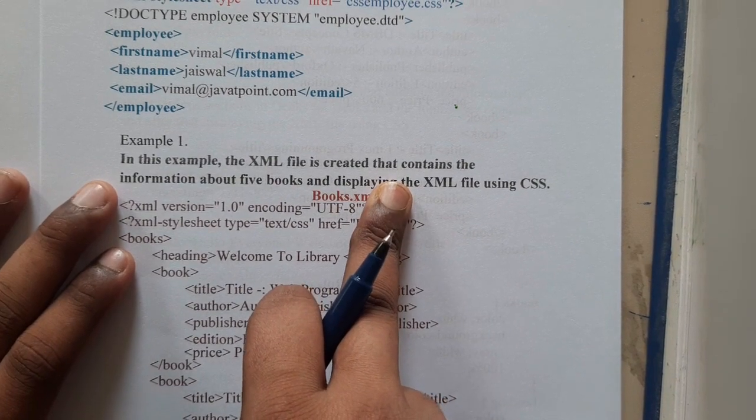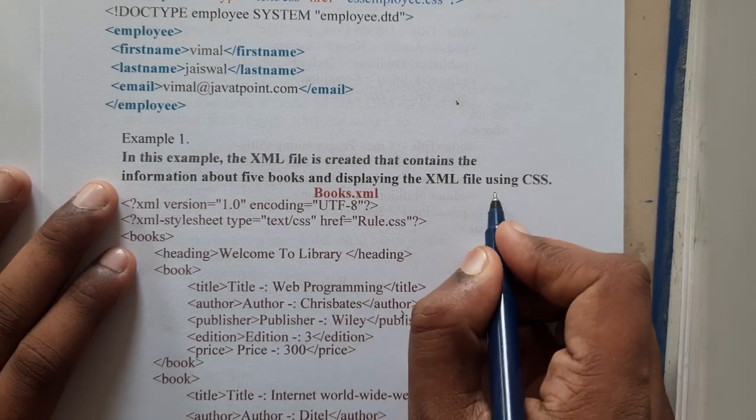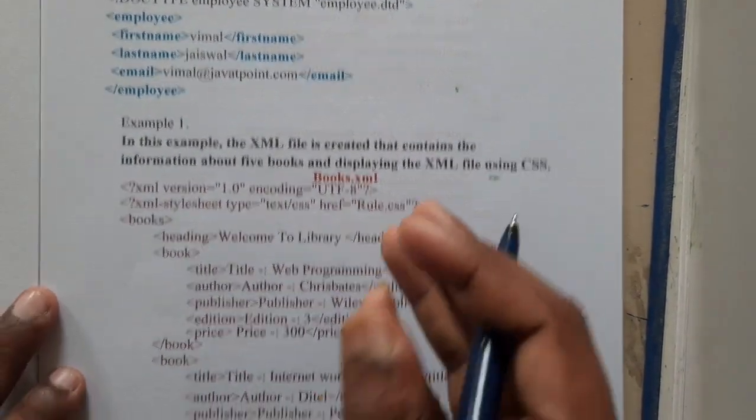The question is to create a file that contains the information about five books and display the XML file using CSS. Now you want to embed CSS to this and make it look good.